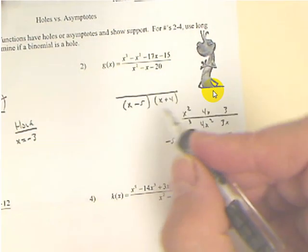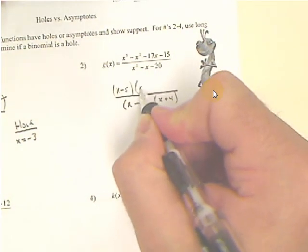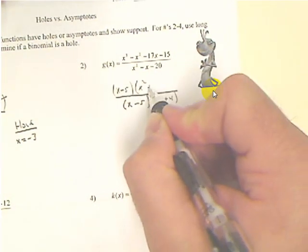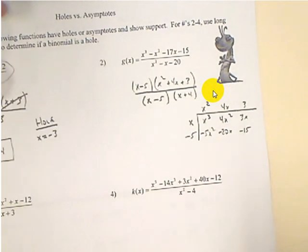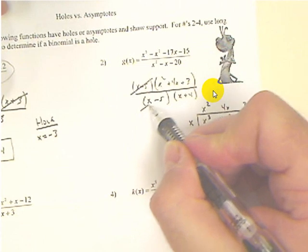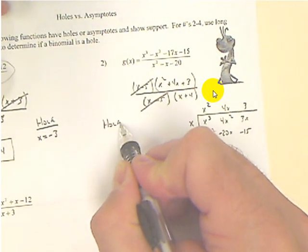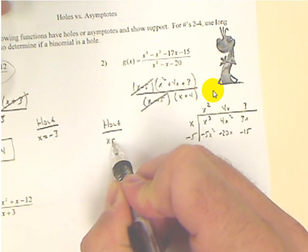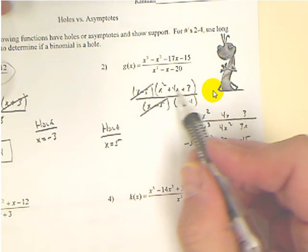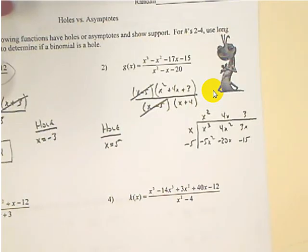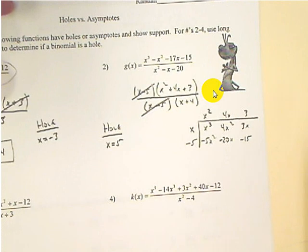So right now what we have is x minus 5 times x squared plus 4x plus 3. And because this x minus 5 and this x minus 5 cancel, we just found and proved a hole at 5. Now we need to see if x plus 4 is in there. Because if the x plus 4 cancels, then we found another hole. We could have two holes. We could have two asymptotes. We could have one of each. There's no rules for that.